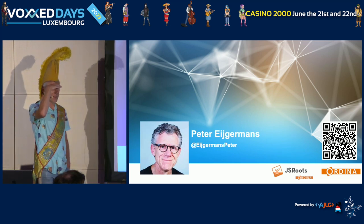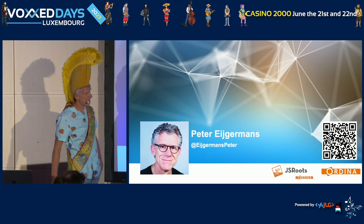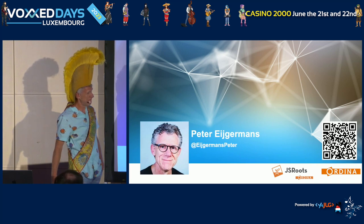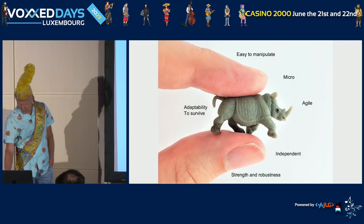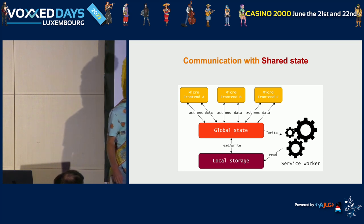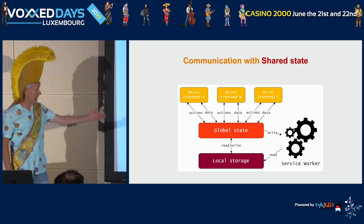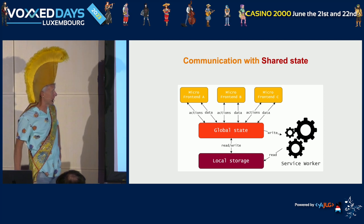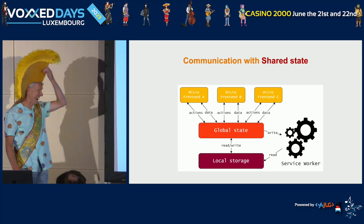Q&A: Is this technology mature enough, and how does it behave with progressive web apps and offline usage, since you're communicating to get components? Is it still possible to make something offline with micro frontends? Yes, of course. You can use a service worker — that's what you use with progressive web apps. You can use it in this way, also without a global state.